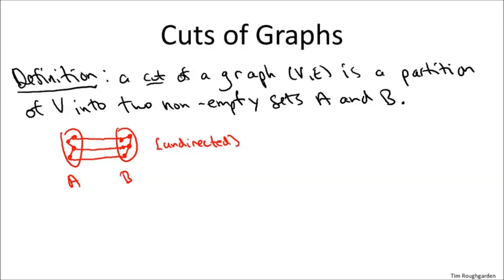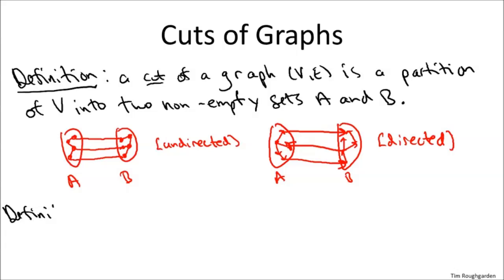The picture for directed graphs is similar. You would again have an A and you'd again have a B. You have directed edges with both endpoints in A. Directed edges with both endpoints in B. And now you actually have two further categories. You have edges who cross the cut from left to right, that is whose tail vertex is in A and whose head vertex is in B. And you can also have edges which cross the cut in the opposite direction. That is, their tail is in B and their head is in A.